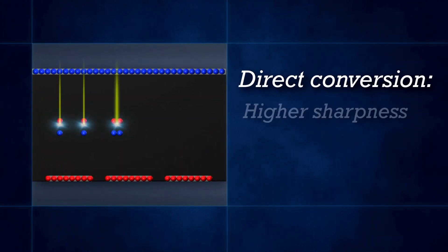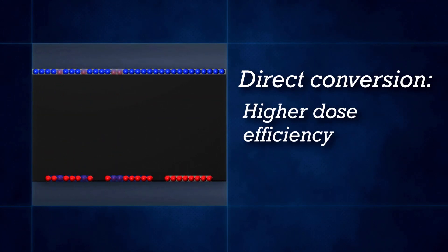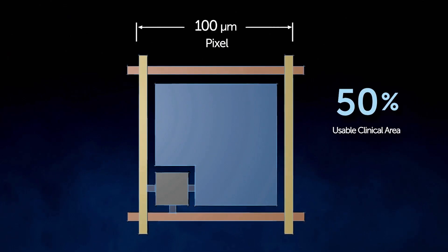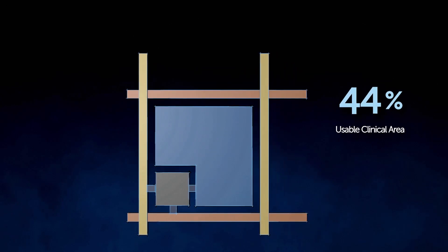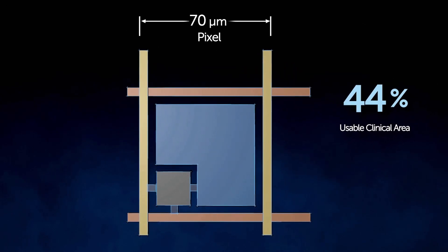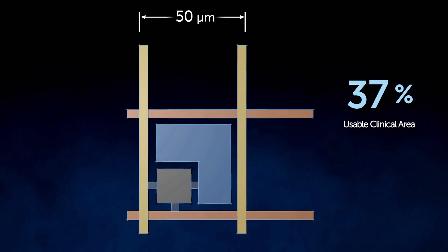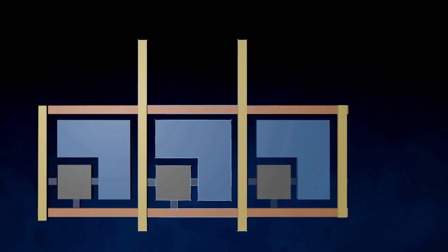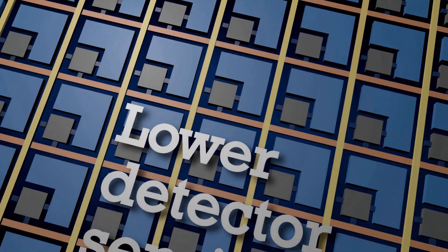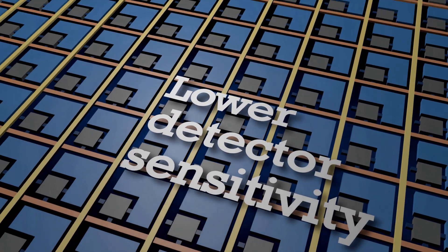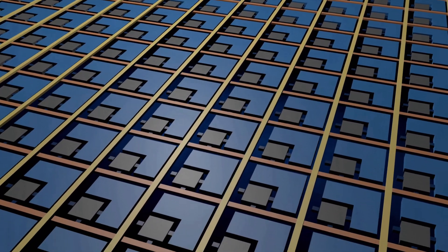Direct conversion increases sharpness and dose efficiency, but there are challenges to reducing pixel size using conventional technology. As pixel size is reduced, the usable clinical area from each pixel is reduced, as more and more space is occupied by electronics such as thin film transistors, resulting in lower detector sensitivity and increased noise.